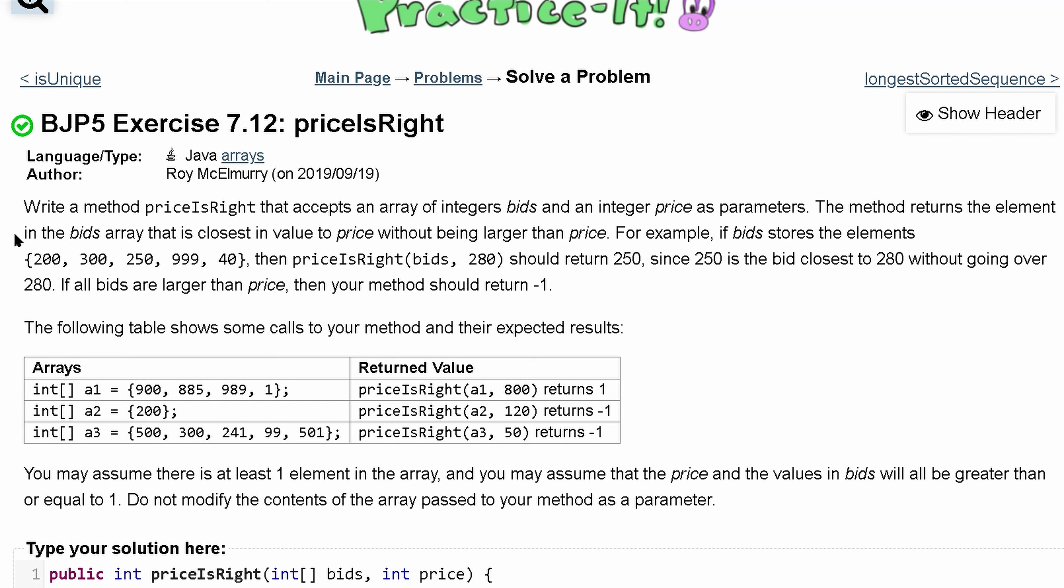We know our method is returning the element in the bids array that is closest to the value in price, without being larger than it. Basically, you want to get as close as you can to this price value without going over it. If you go over it, that's bad. So don't go over it.